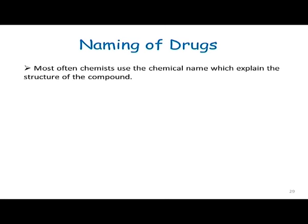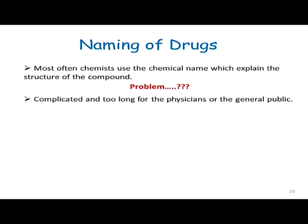How to name a drug — naming is something tricky. Most chemists use chemical names which explain the structure of a compound, but those structures cannot be given as the drug name because they are too complicated and too long for physicians or the general public. For example, sulfonamide could be called 4-amino-benzene-sulfonamide compound — easy for an organic chemist but not for a physician sitting in a clinic to remember. That is why it is important we name drugs as simply as possible.